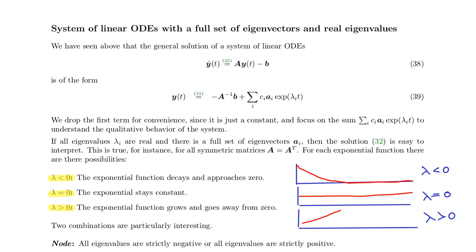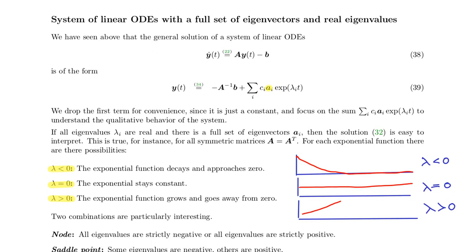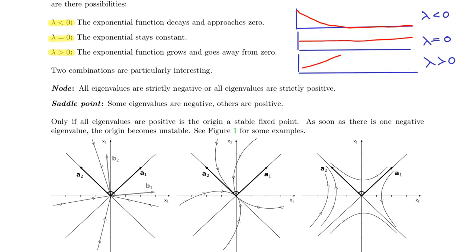So we see this behavior here as well, but in the directions of eigenvector A. Two combinations are particularly interesting: the node and the saddle point.